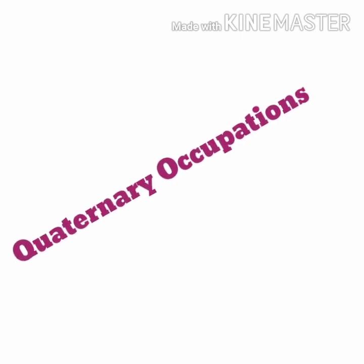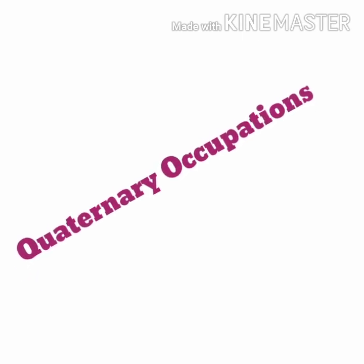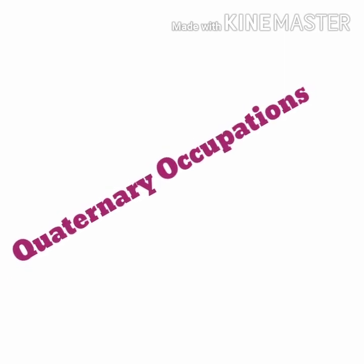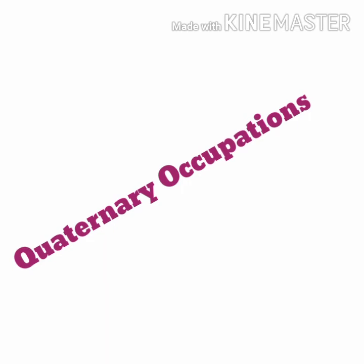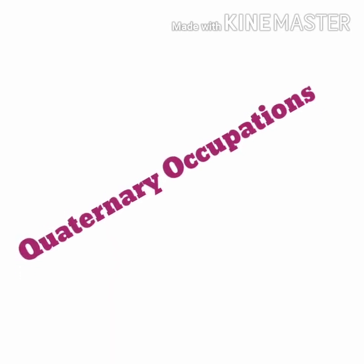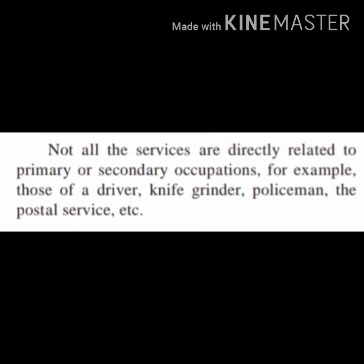For example, in quaternary occupations, scientists, doctors, lawyers, and teachers are people that need special skills, which is why they are included in quaternary occupation. Not all services are directly related to primary or secondary occupations. Those of a driver, knife grinder, policeman, the postal service, etc. are also included in the quaternary occupation.